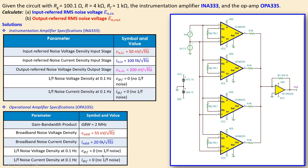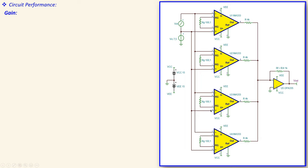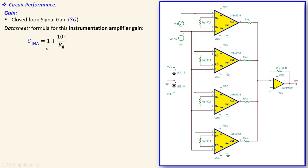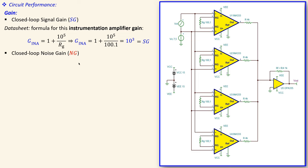Let's look at the circuit performance. From the signal gain perspective, we use the instrumentation amplifier datasheet expression to determine the gain. Using the gain-setting resistor of 100.1 ohms, we get an instrumentation amplifier gain of 1000 — that is also the signal gain. We also need the noise gain, and for this circuit the noise gain can be set equal to the signal gain, which is also 1000.